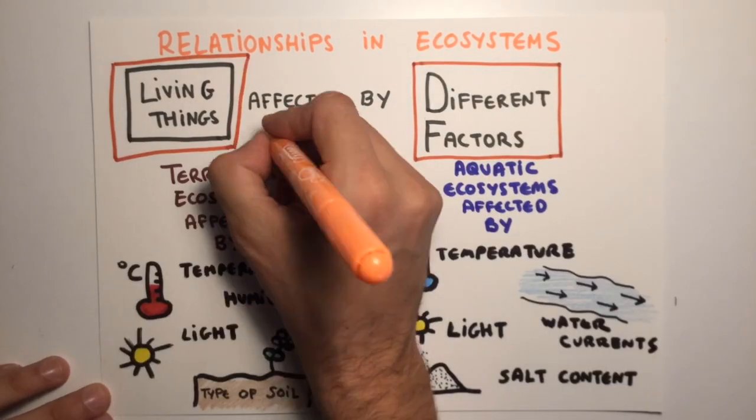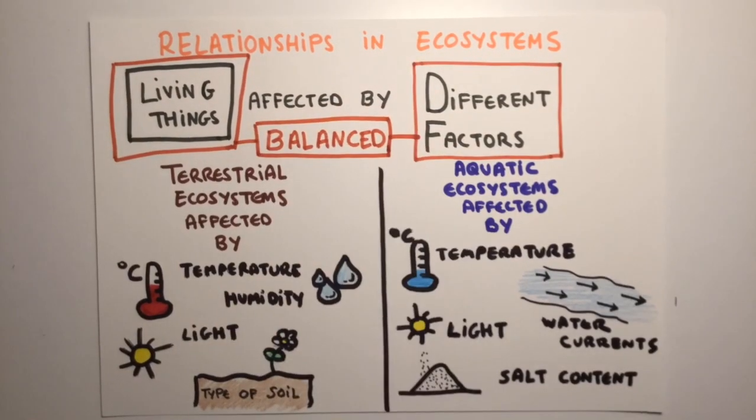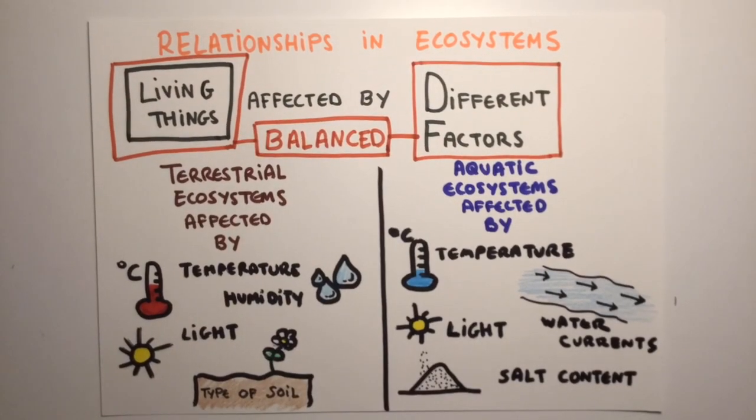The components of an ecosystem are in balance with each other. This balance can easily be affected by changes, such as an increase of temperature or the presence of new species.